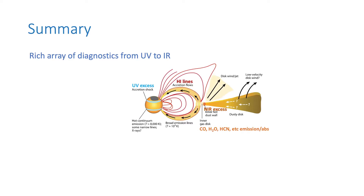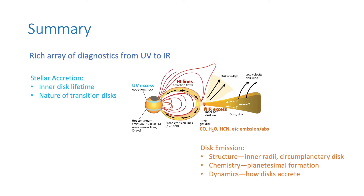So that's my summary. We had a quick look at the range of diagnostics available from the UV to the infrared. We also looked at what we can learn by studying stellar accretion rates to learn about planet formation — even though it's about the star, you can still learn about the planets. And we looked at direct observations of the disks themselves and how their structure, chemistry, and dynamics can be used to learn new things.